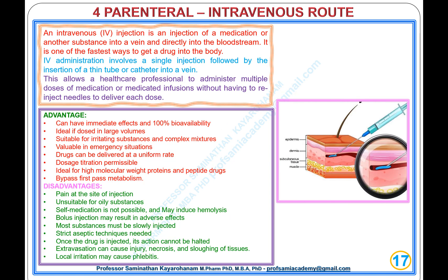Type 4, Parenteral: Intravenous (IV) Route. An IV injection delivers medication directly into a vein and the bloodstream — one of the fastest ways to get a drug into the body. IV administration involves a single injection followed by the insertion of a catheter into a vein, allowing a healthcare professional to administer multiple doses without re-injecting needles for each dose.